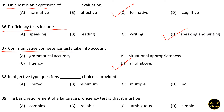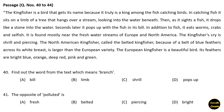Next question: In objective type questions, multiple choices are provided. Next question: The basic requirement of a language proficiency test is that it must be — option A: complex, option B: reliable, option C: ambiguous, option D: simple. It must be reliable. Option B is the correct answer.